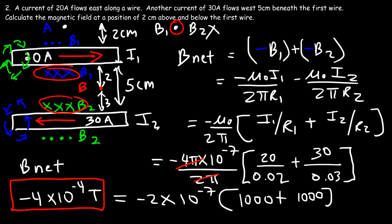So now you know how to calculate the magnetic field due to a long straight wire, or when you have two long straight wires. Just determine the direction of the magnetic field, decide whether to add or subtract them, and remember: out of the page is positive (positive z direction), and into the page is negative (negative z direction).